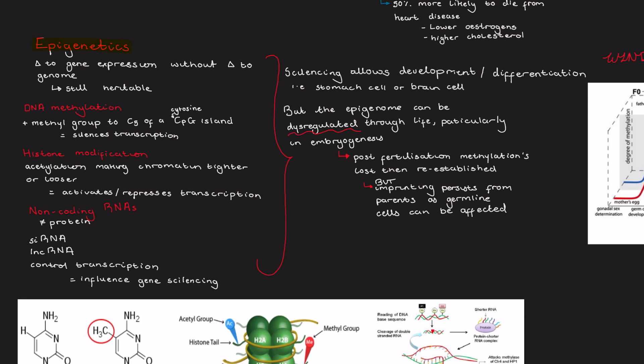The final type of epigenetic influence is the influence of non-coding RNAs. These are RNAs which don't code for proteins. Some examples are siRNAs, which are small interfering RNAs, and they control transcription regulation and influence gene silencing.